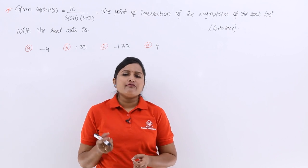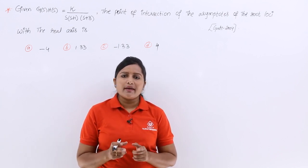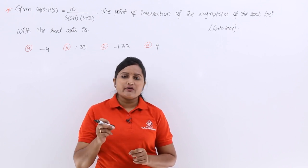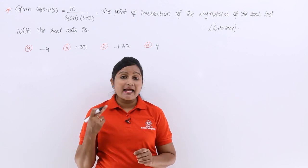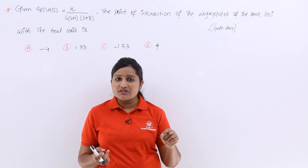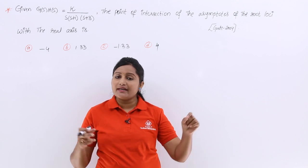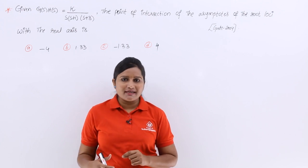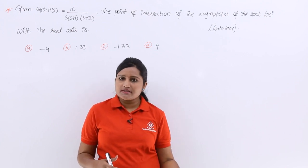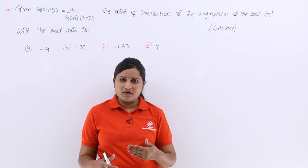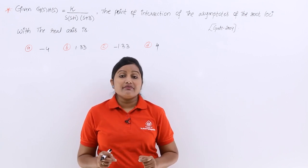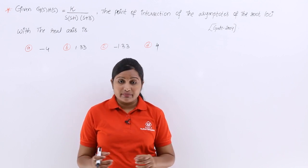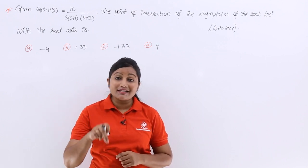The key point for this problem is knowing about the centroid. Centroid is the intersection point of asymptotes on the real axis. Note that the intersection of asymptotes on the imaginary axis is a different point — that intersection point can be found using the Routh array, which we have covered in a previous video. Here we are finding the centroid, that is the intersection point of asymptotes on the real axis.